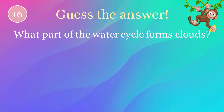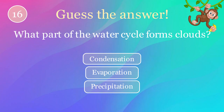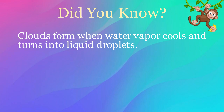What part of the water cycle forms clouds? Options: condensation, evaporation, precipitation. The correct answer is condensation. Here's an interesting fact: clouds form when water vapor cools and turns into liquid droplets.